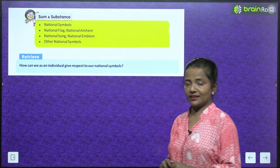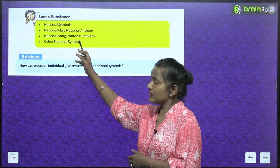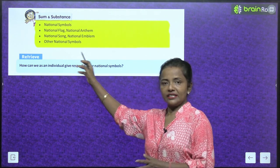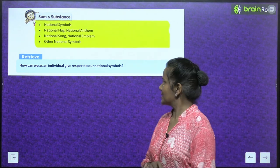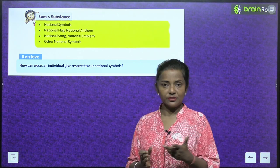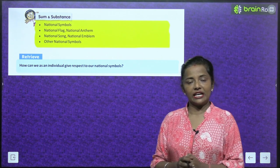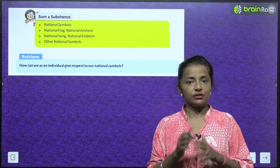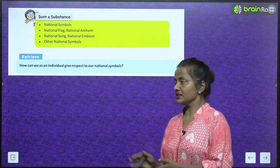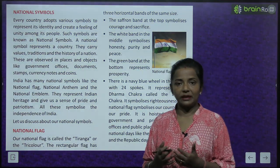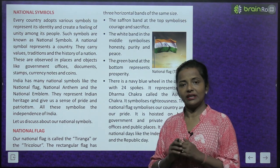This chapter covers the national flag, national anthem, national song, national emblem, and other national symbols. This chapter is totally about national symbols. Think about how we as individuals can give respect to our national symbols. First, let's read the lesson and come to know about the national symbols, then think about how we can respect them.